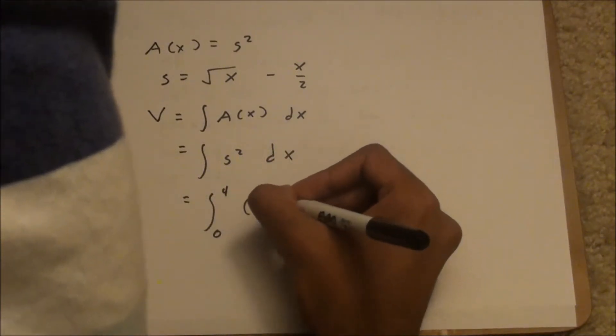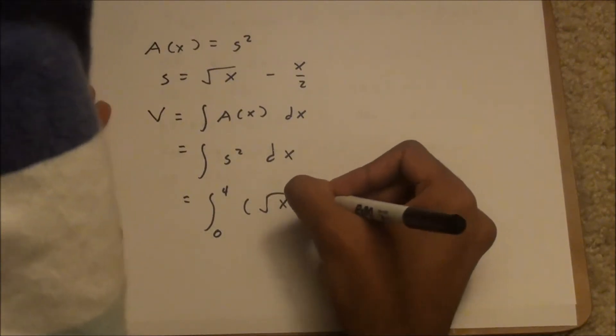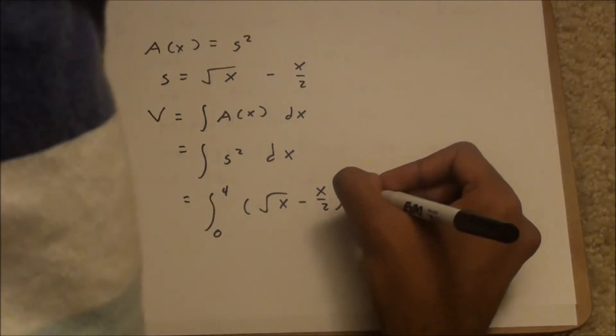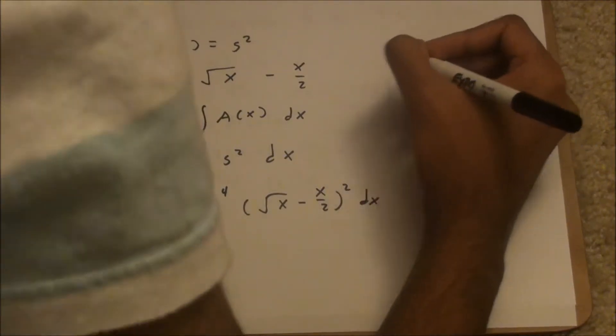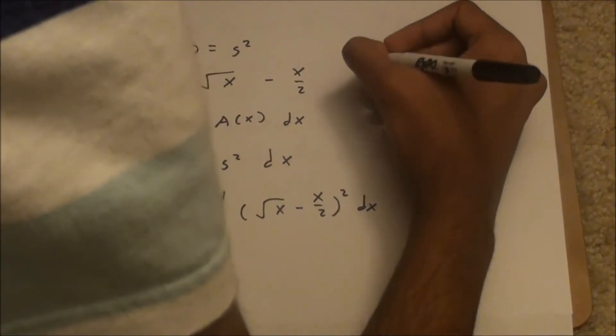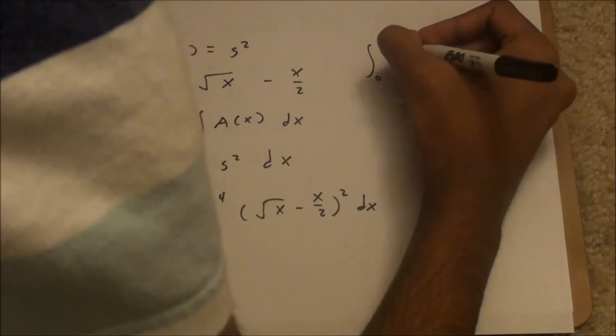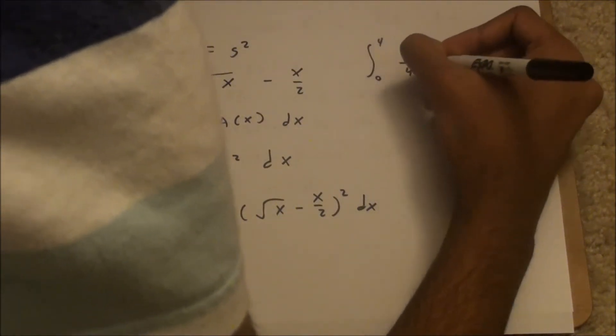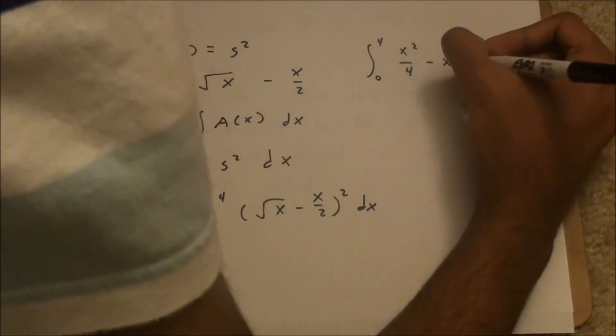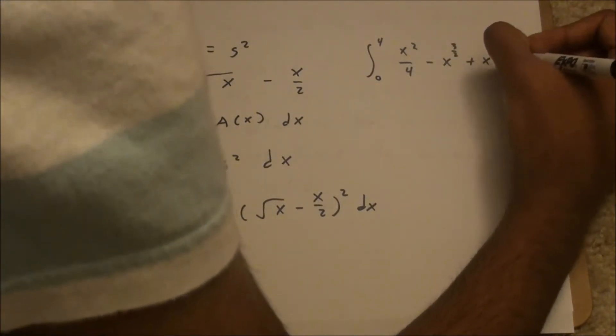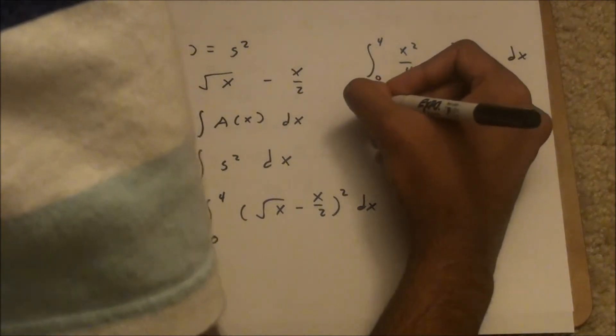We have the square root of x minus x over 2 squared dx. If you multiply this out, you'll get from 0 to 4, x minus x to the 3 halves plus x squared over 4 dx.